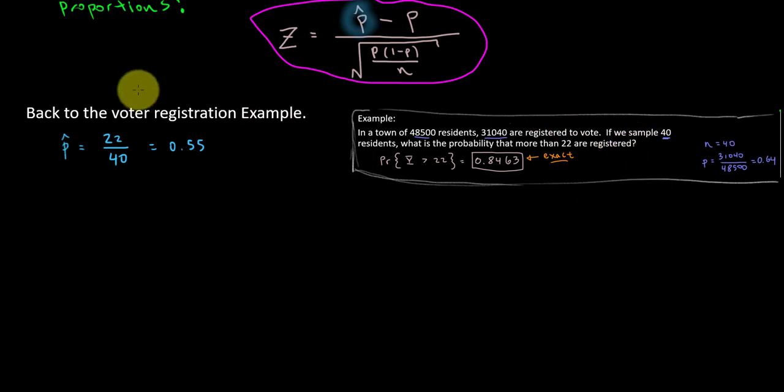And we know all the other values. So let's plug all these in, and we're going to do a z-score for this sample proportion. 22 out of 40 voters, that's 55% of the sample. That is a little bit less than the population proportion of registered voters, which is 0.64. So that's going to be a negative z-score. In the denominator, we've got p, 0.64, times 1 minus 0.64, over n. That was the sample size of 40.